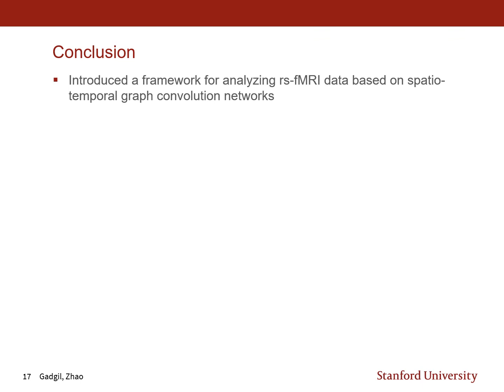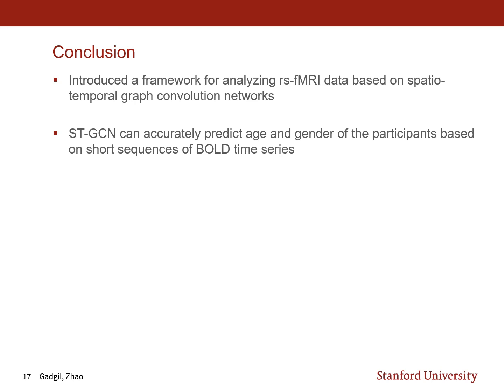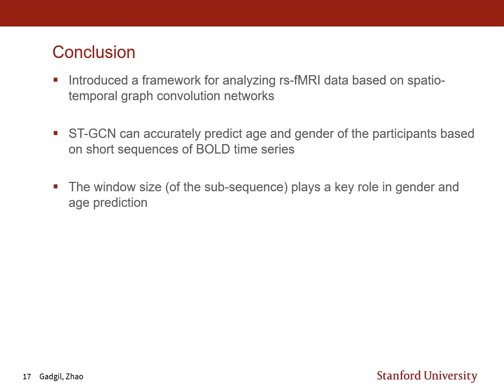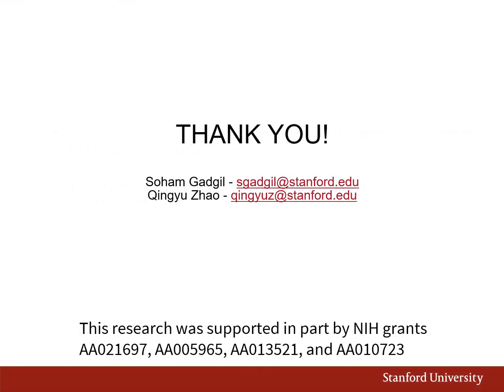In conclusion, we introduced a new framework for analyzing resting state functional MRI scans based on spatiotemporal graph convolution networks, which consider both the spatial and temporal aspects of the 4D BOLD signal required for prediction tasks. Secondly, instead of considering the entire BOLD signal, we use short sub-sequences and showed that STGCN can accurately predict age and gender using these. Finally, the window size of the sub-sequence plays a key role in gender and age prediction. Thank you, and feel free to reach out with any questions.